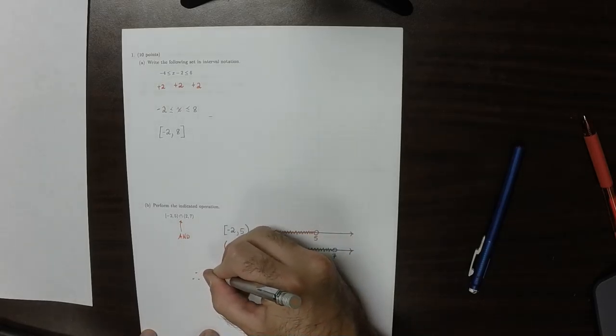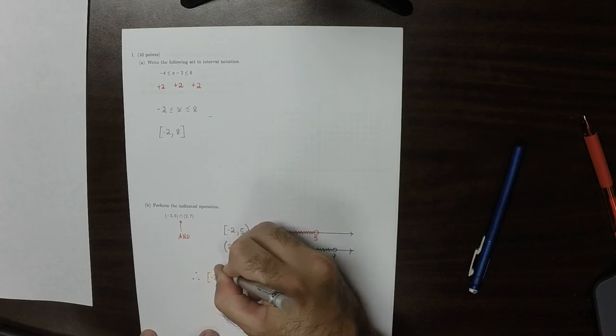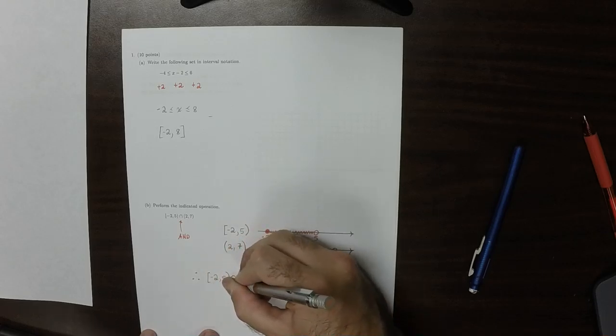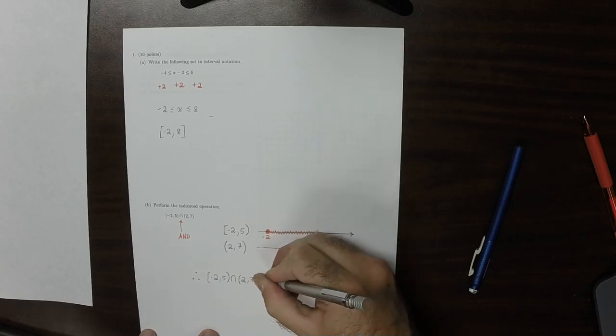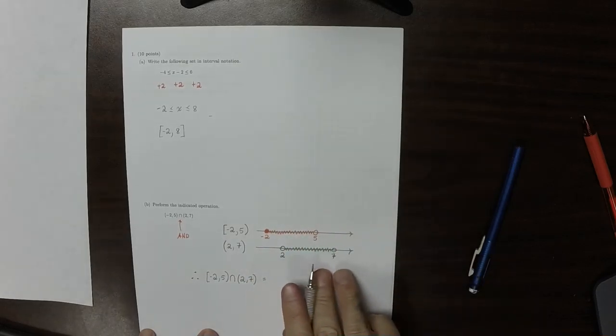Therefore, the intersection of negative 2 to 5 intersect 2 to 7 is 2 to 5.